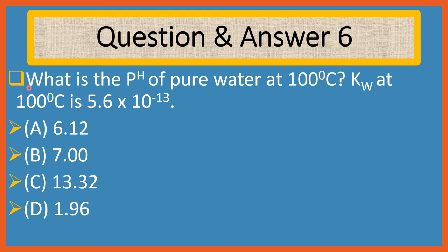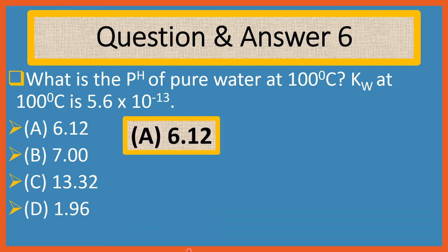Question 6. What is the pH of pure water at 100 degrees Celsius? KW at 100 degrees Celsius is 5.6 × 10^-13. Choices are: A. 6.12, B. 7.00, C. 13.32, D. 1.96. Answer is A: 6.12.